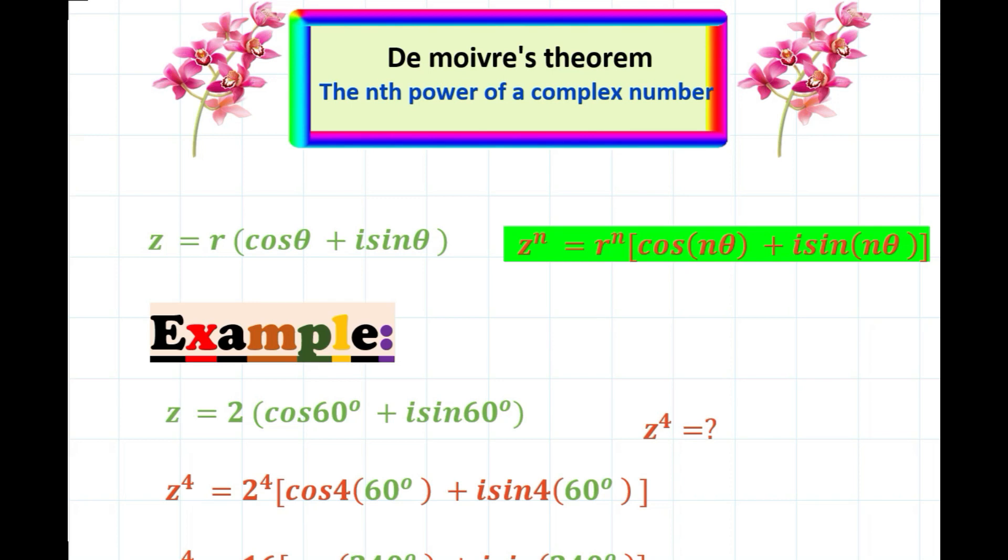Now we will talk about De Moivre's theorem. In fact, I use this formula to find the nth power of a complex number. If I have z equals r cosine theta plus i sine theta, to find z to the power n, I will use this formula: z to the n equals r to the n times cosine n times theta plus i sine n times theta.